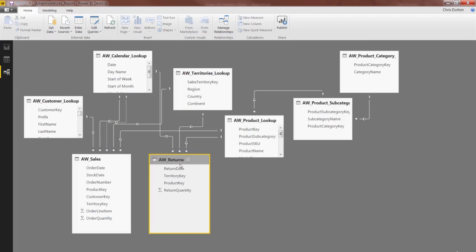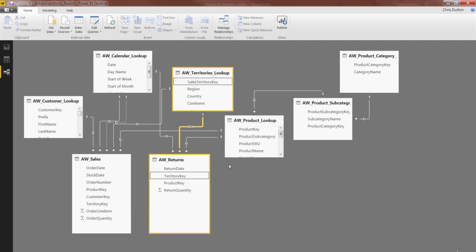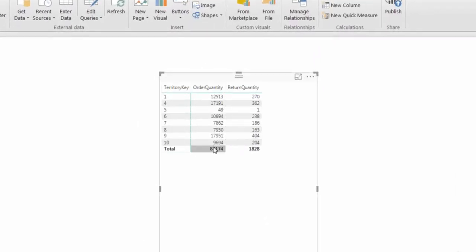When we jump to our Relationships view, and we find that relationship from returns to territories, we can double-click to edit, drill into this cross-filter direction, change it to both, and press OK. See that little arrow switch from one direction to both? And now when we return to the report, this is exactly what we had talked about. So now order quantities look to be correct.